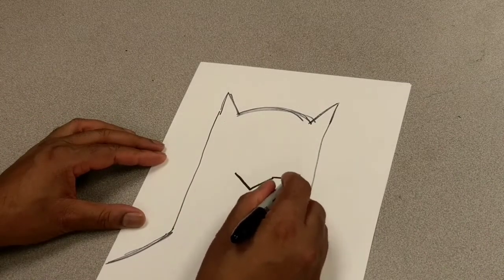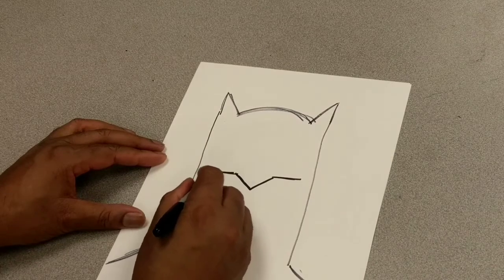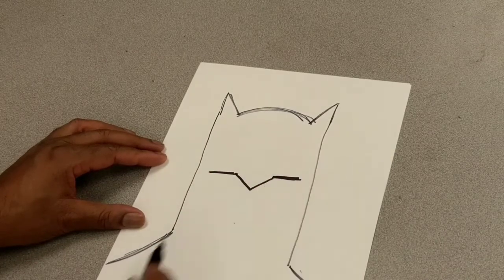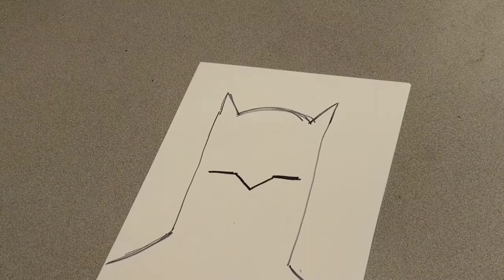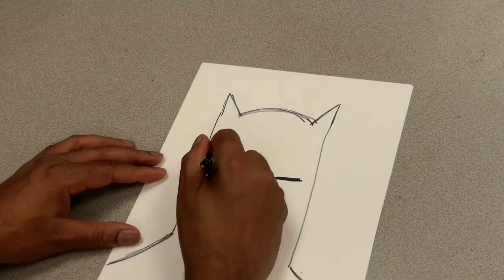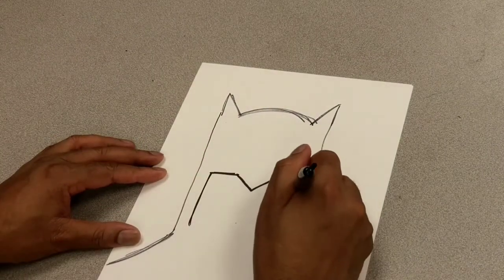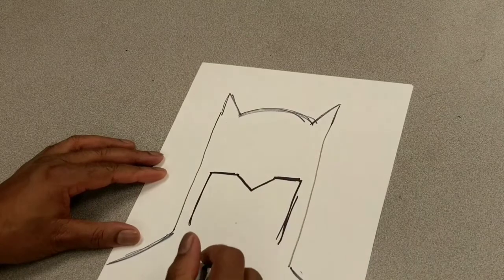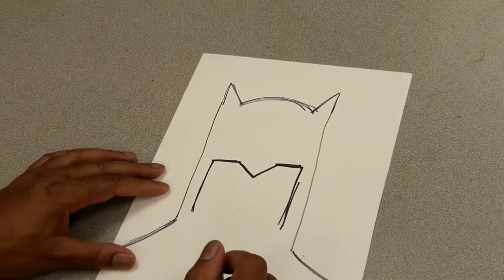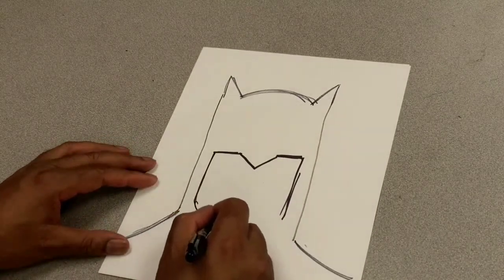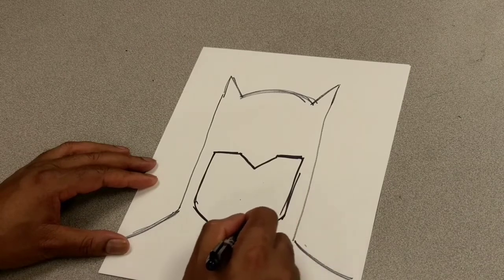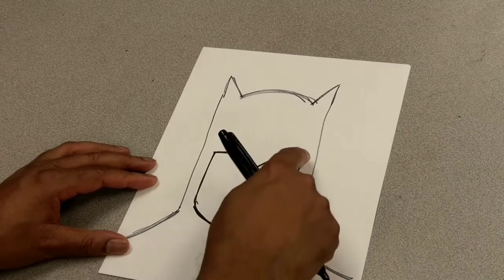We're going to go like this. One. Two. Then, we're going to do like a U-shape for Batman's chin. We're going to come down like this. Then, we're going to go like this. It's almost like a long U-shape. See the U-shape?